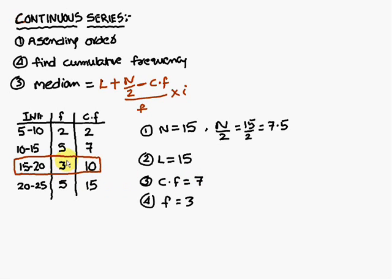And frequency is the corresponding frequency. Therefore it is 3. Next, the interval I, 15 to 20, difference is 5. Therefore I is equal to 5.